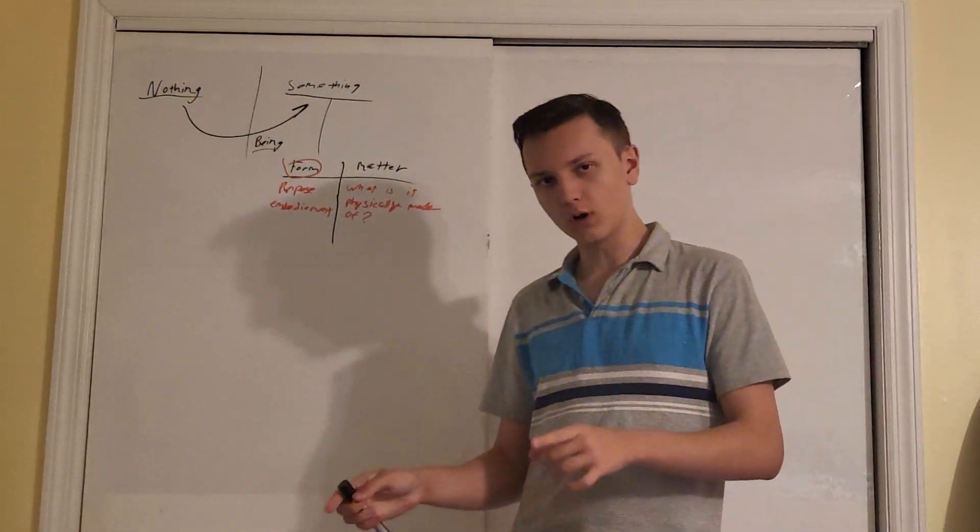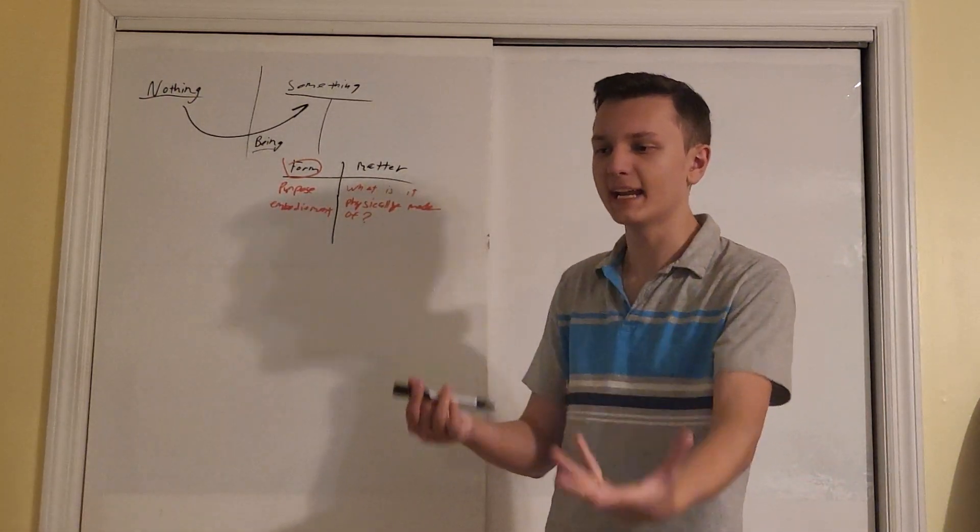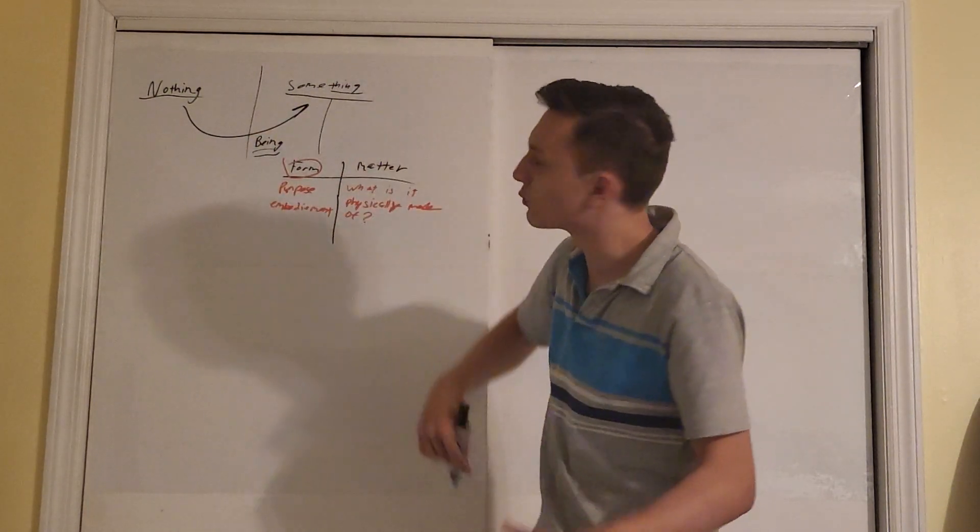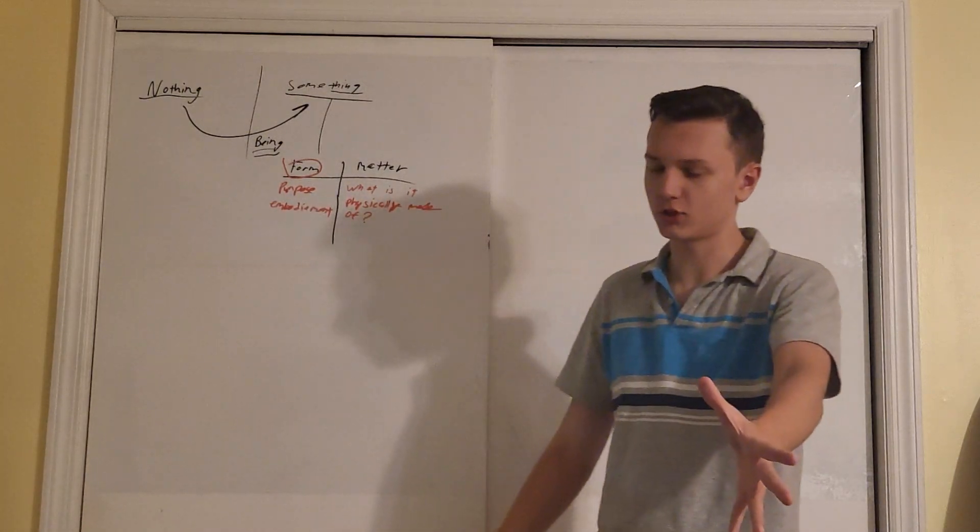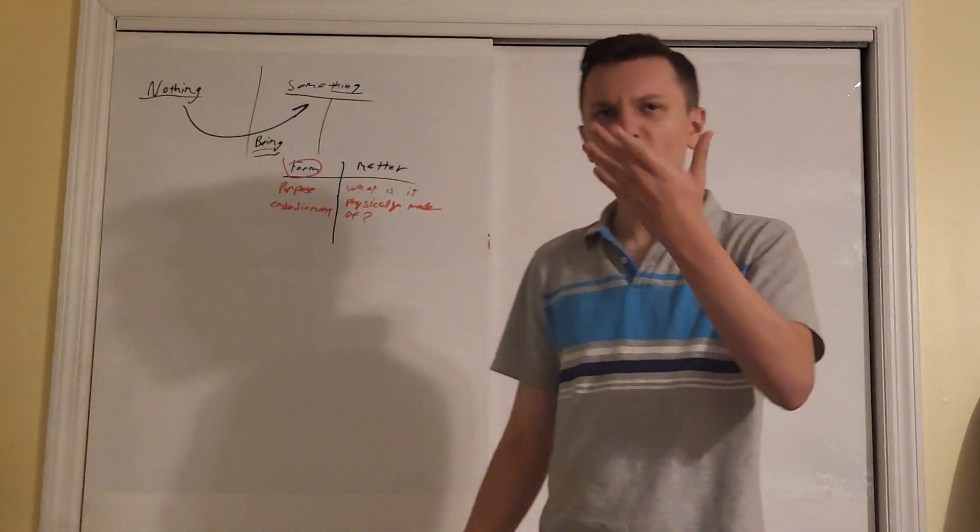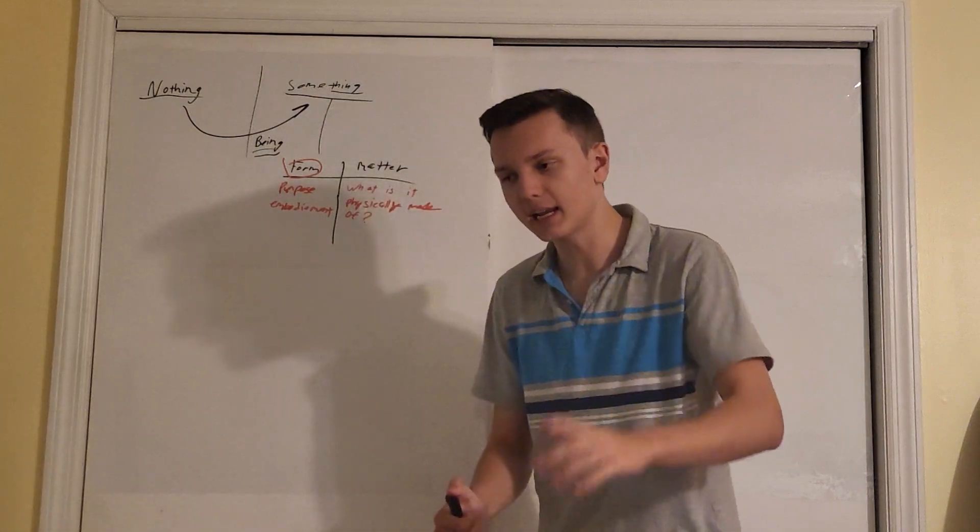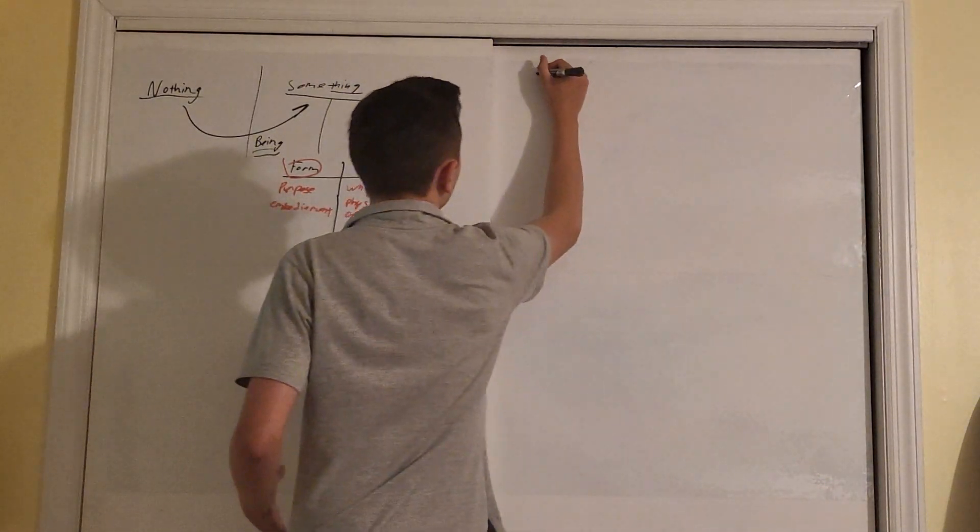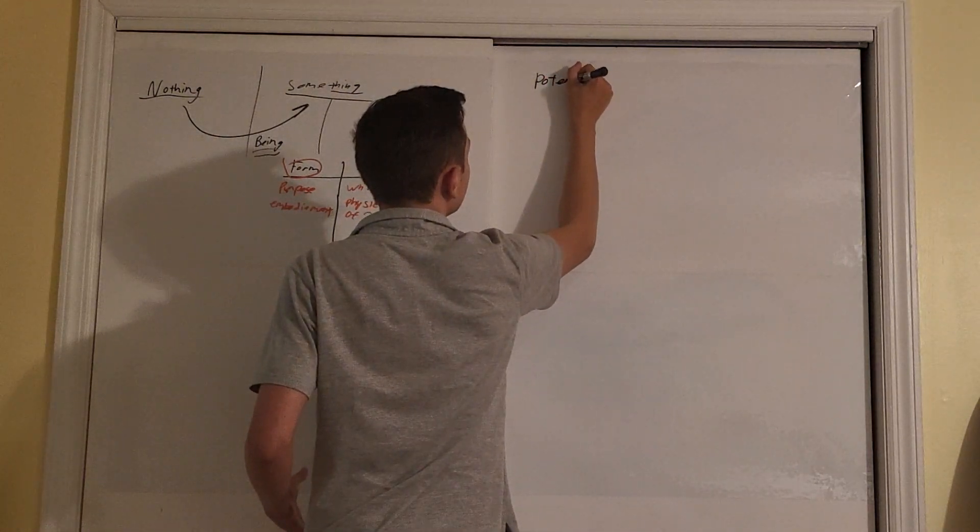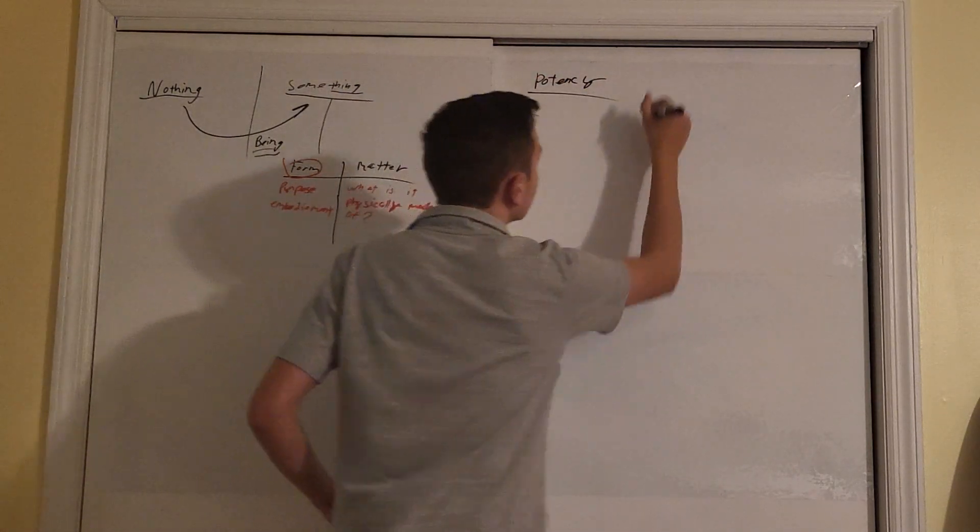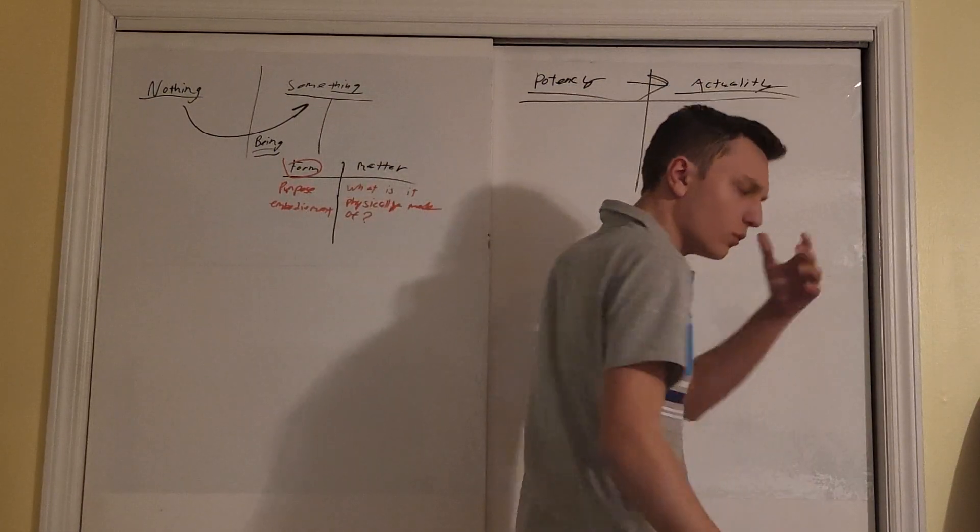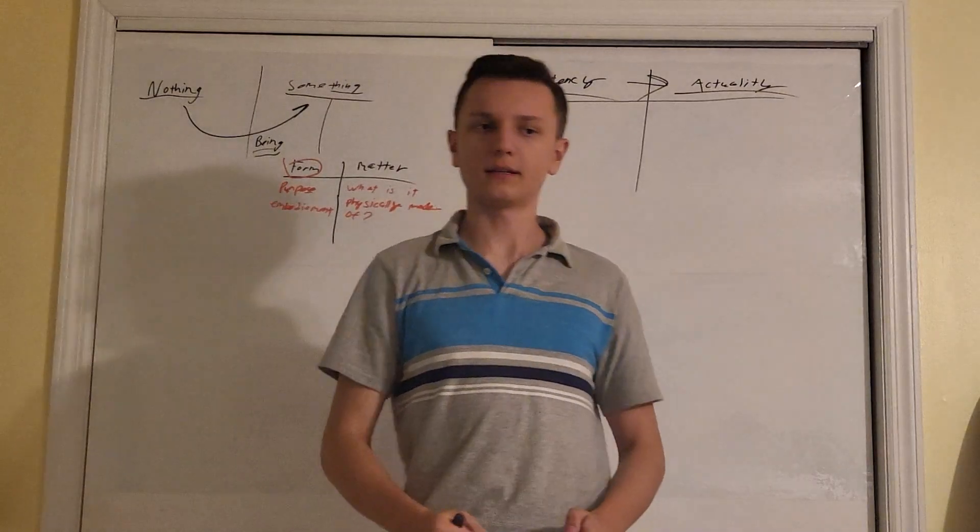Now that we know what form and matter are, let's explore another very profound discovery of the Aristotelian thinkers of the time. Everything in the world has the capacity for change. Every being, everything in the world has the capacity for change.